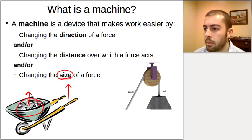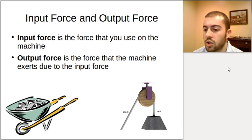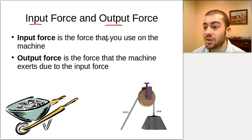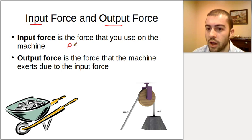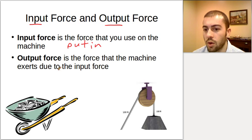Those are the three main ways machines make work easier: changing the direction of the force, changing the distance the force acts over, or changing the size of the force. Two important vocabulary terms here are input force and output force. Input force is the force you apply to the machine — what you put in. Output force is the force the machine exerts as a result — what you get out.